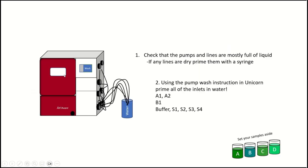Okay, so the first thing you're going to do is check that the pumps and all the inlet lines are mostly full of liquid. If any of the lines are completely dry, you need to prime them with a syringe. Then you're going to put all the lines you're using into water and prime them with the pump wash instruction. This is going to be A1, A2, B1, the sample pump buffer line, then S1 through 4.